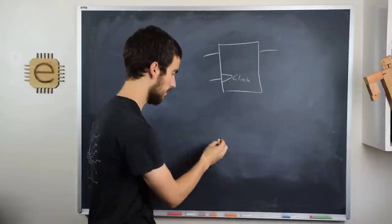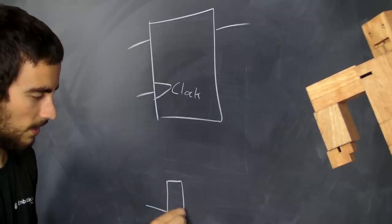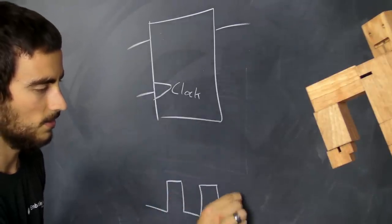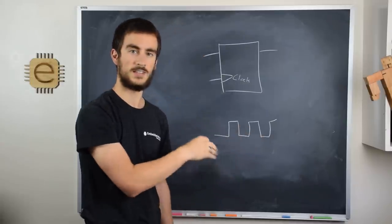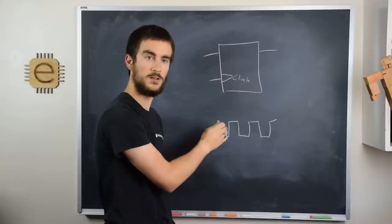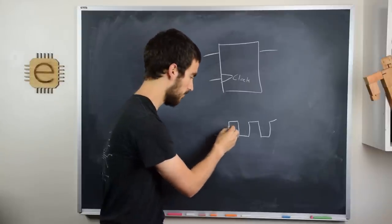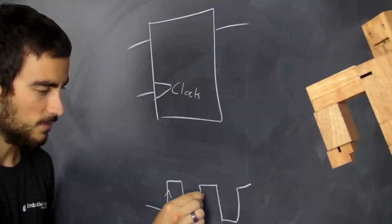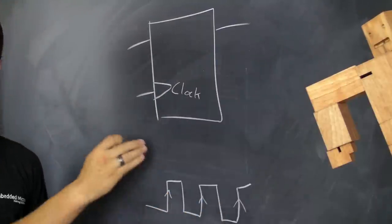A clock, if you're not familiar, is just a signal that goes from low to high to low to high to low to high, over and over again at a set frequency. And there's actually a special event on this clock, which is known as the rising edge, and that's when the clock goes from low to high.